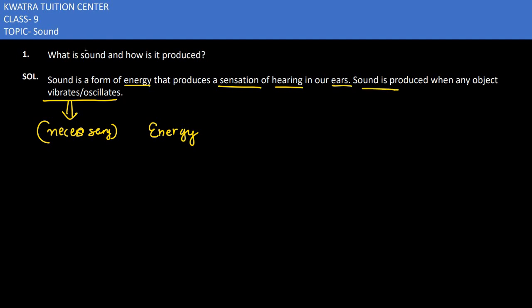can produce sound. So for any object to produce sound, the necessary condition is that they must vibrate or oscillate. Otherwise it is not possible to produce sound. That would be the answer for the first question.